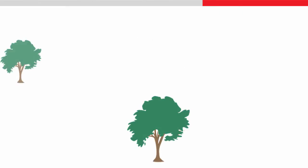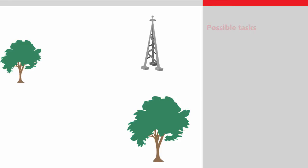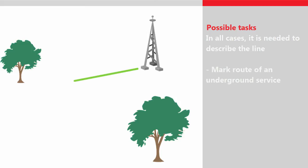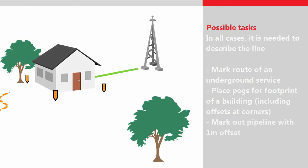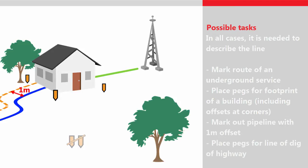Before looking at the apps and what they can do, let's remind ourselves of what the possible tasks may be. In all cases, it is basically wanted to place pegs or spray marks on the ground which describe the line. For example, mark out the route where an underground service should be constructed, place pegs for the location of a building footprint including the offsets to the building, mark out the route of a pipeline at a 1m offset, or place pegs along a new highway construction to define where an excavator should start to dig a 1 in 2 slope.